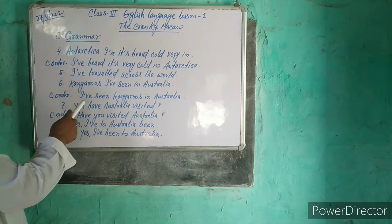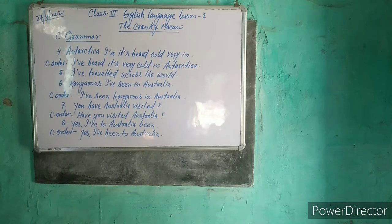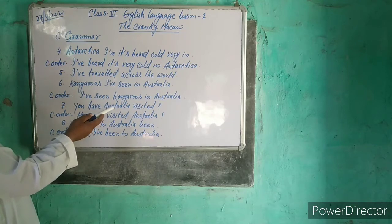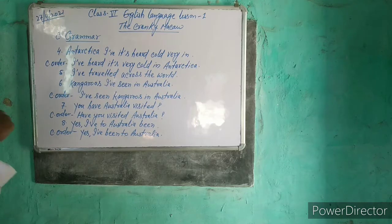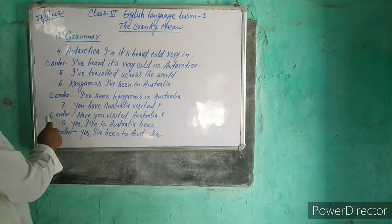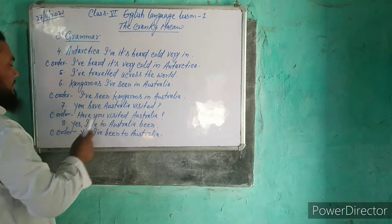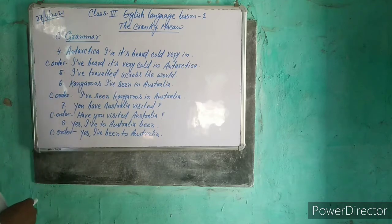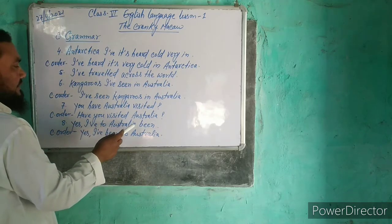The seventh sentence is: you have Australia visited. It is not in correct order. It is a question, so we will keep the auxiliary verb in the beginning. The correct order is: Have you visited Australia?